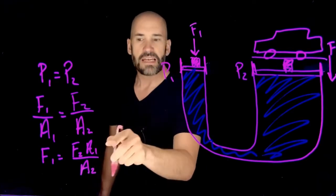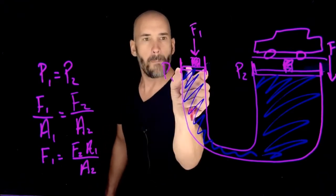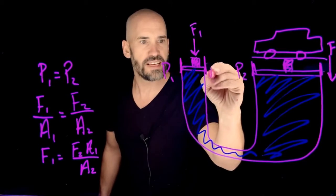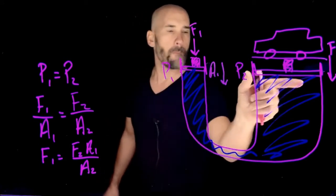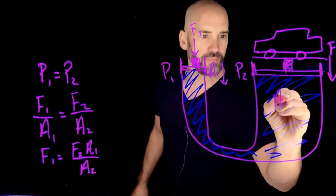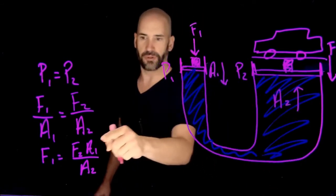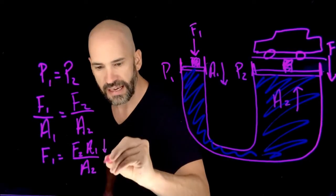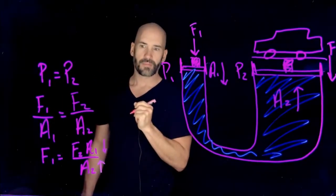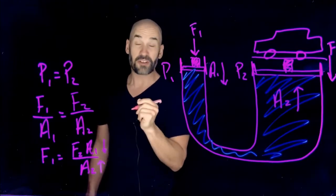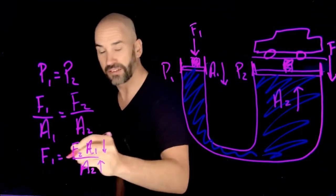So check this out. This means that if we minimize this area, so if we take this area A1 and we make it smaller, while we maximize A2, make A2 as big as possible, so this goes down and this goes up, what happens to F1? It's going to go down, like pretty dramatically.